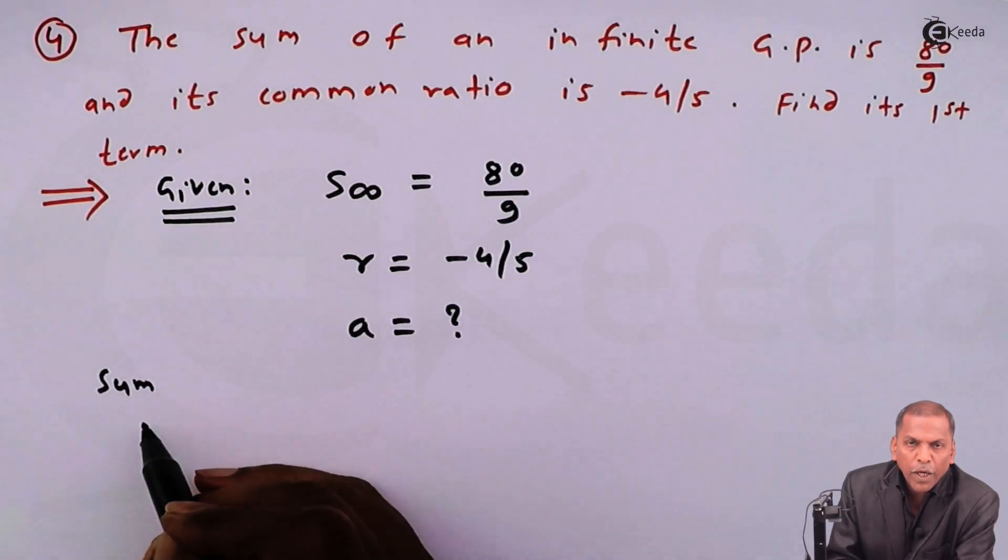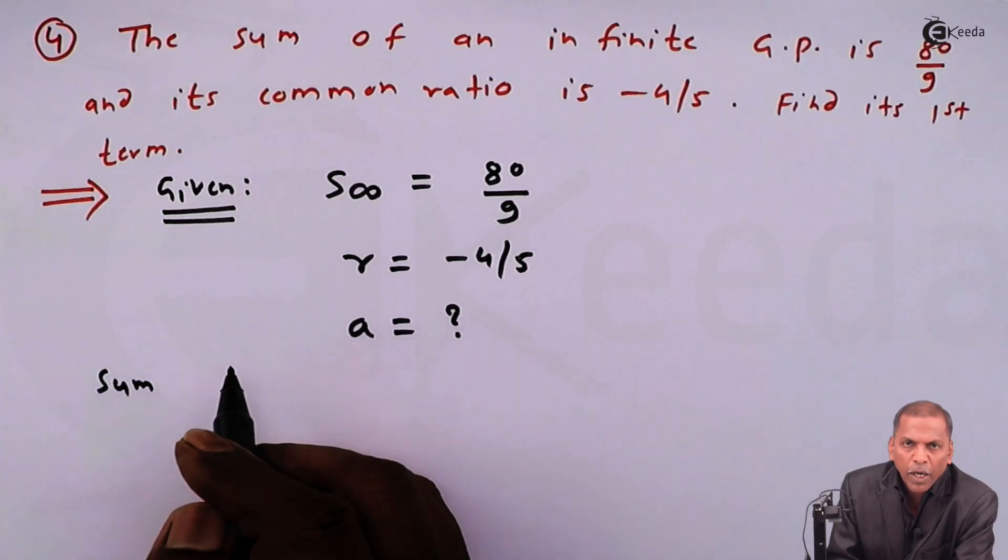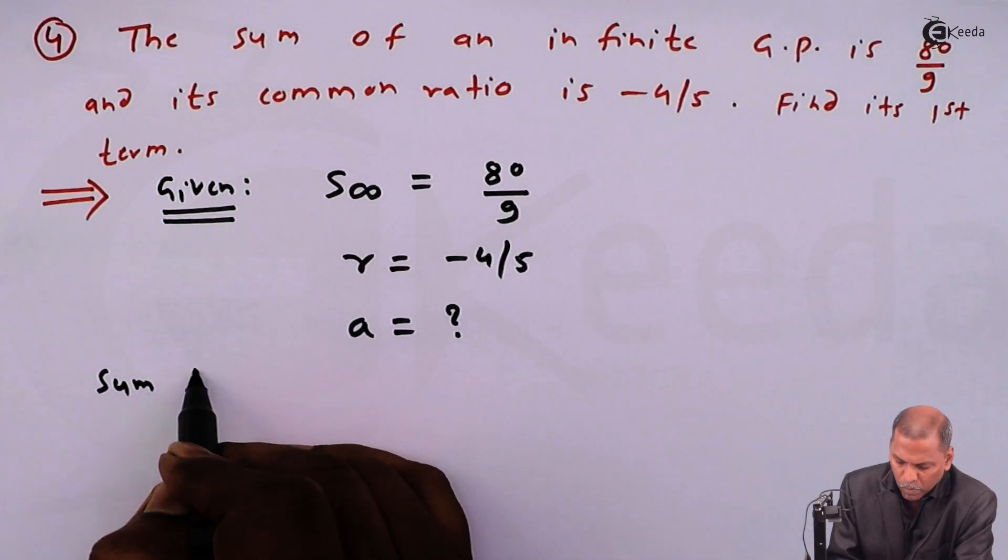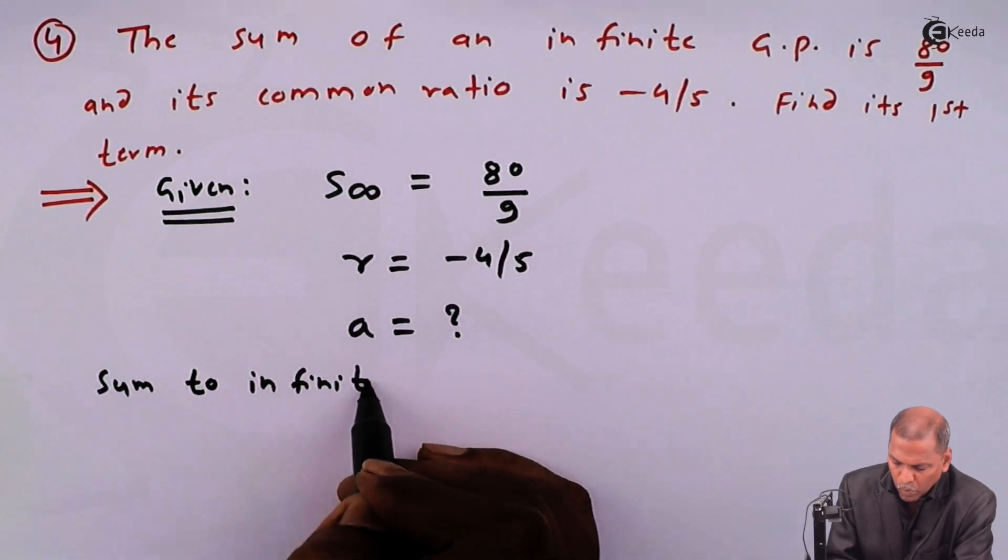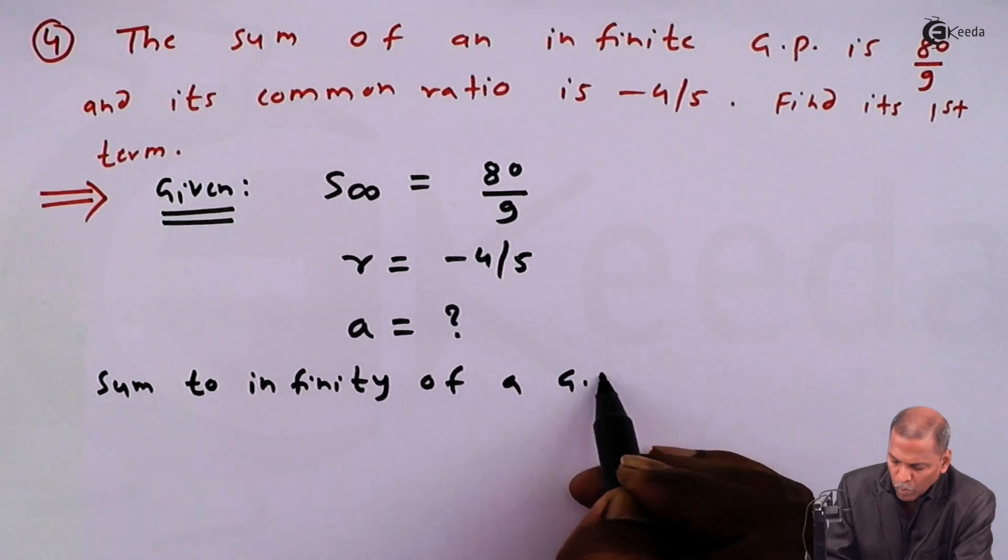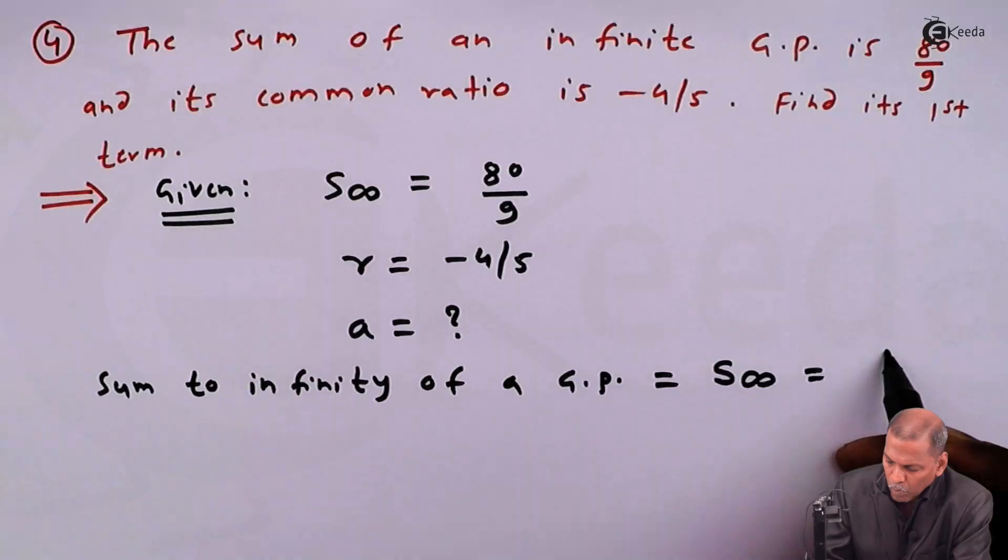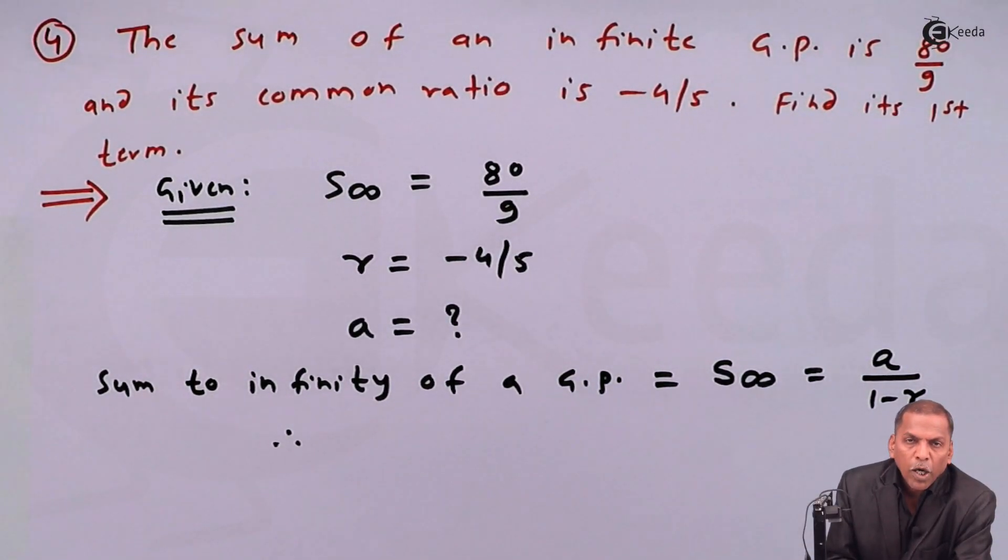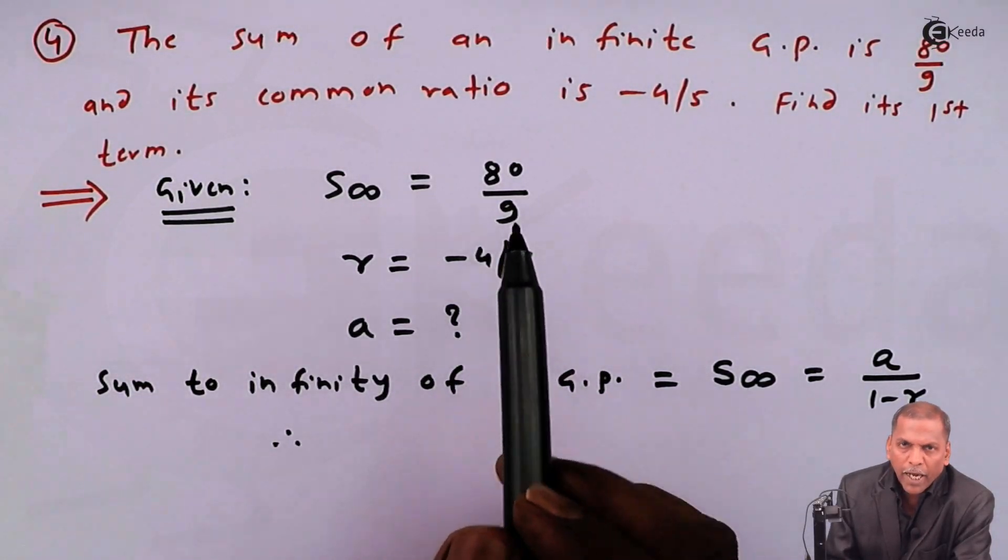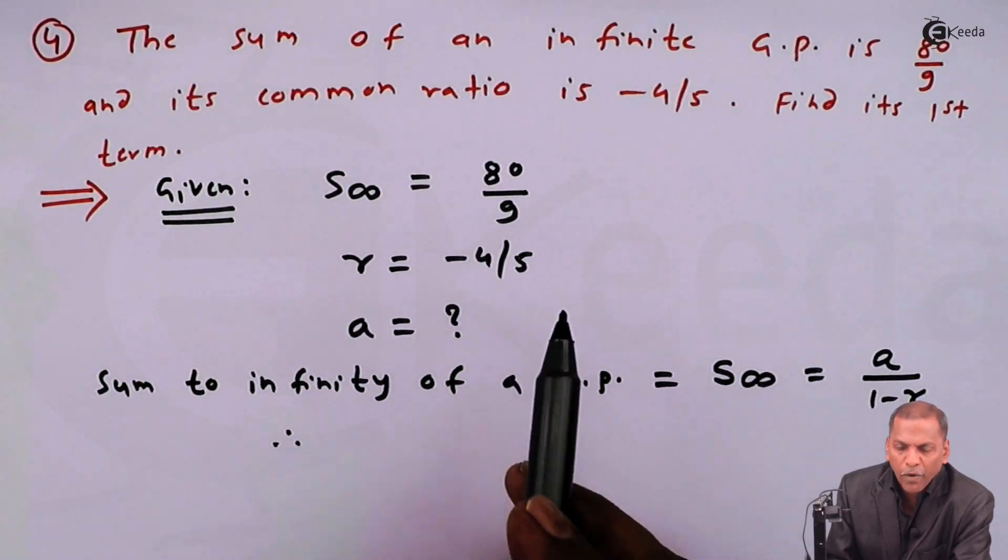Now, sum to infinity of a GP is equal to a upon 1 minus r. Now substituting S infinity is equal to 80 upon 9 and for r equal to minus 4 upon 5, we get: